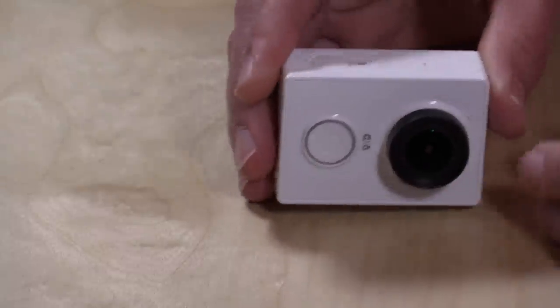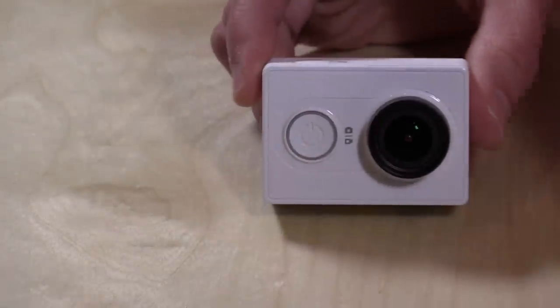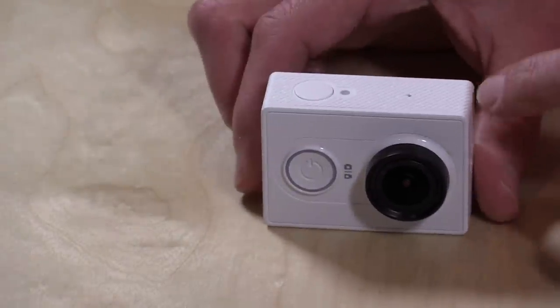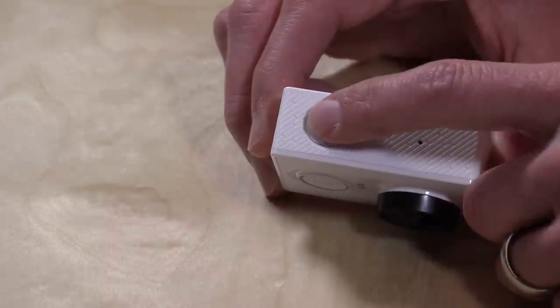You cannot do any configuration at all on the camera, so it has to be done through the Android app. When you get this, it comes with a Chinese instruction manual which might be a little off-putting at first, especially if you don't speak Chinese. Luckily the app is in English if your Android version is set to English, so you will be able to see, read, and know what you're doing with this when you get it hooked up.